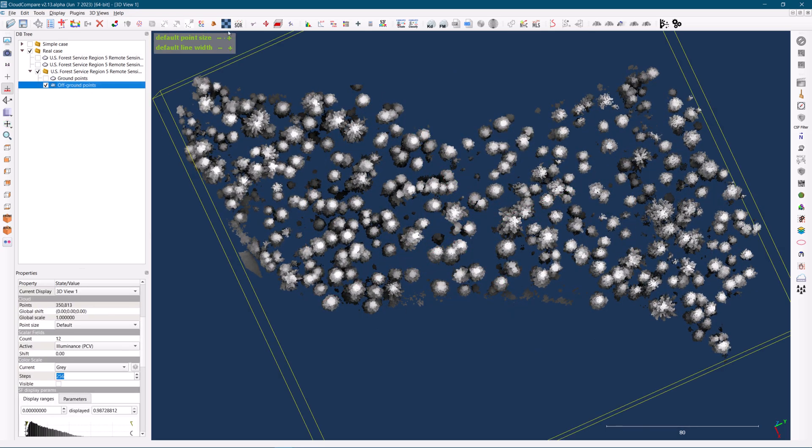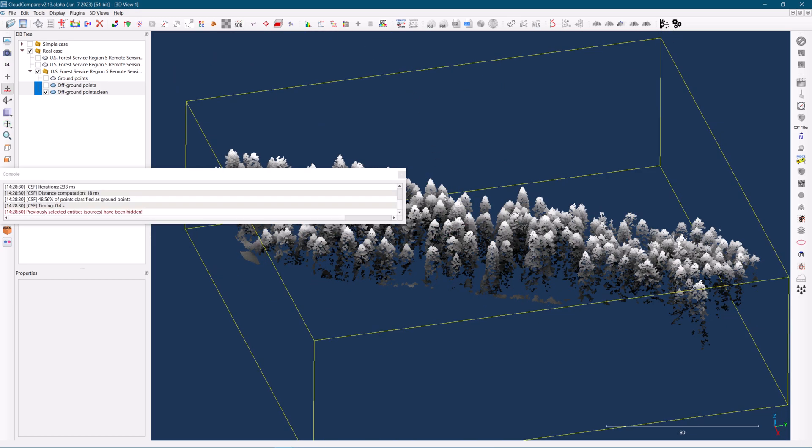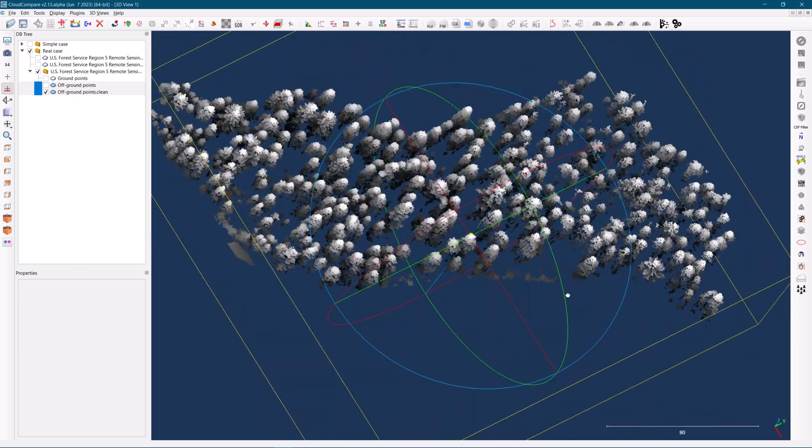Following that, the statistical outlier removal filter will be applied to eliminate isolated points in the ground, as our goal is to isolate the trees themselves. Removing any remaining noise or clutter will prevent them from misleading our results.